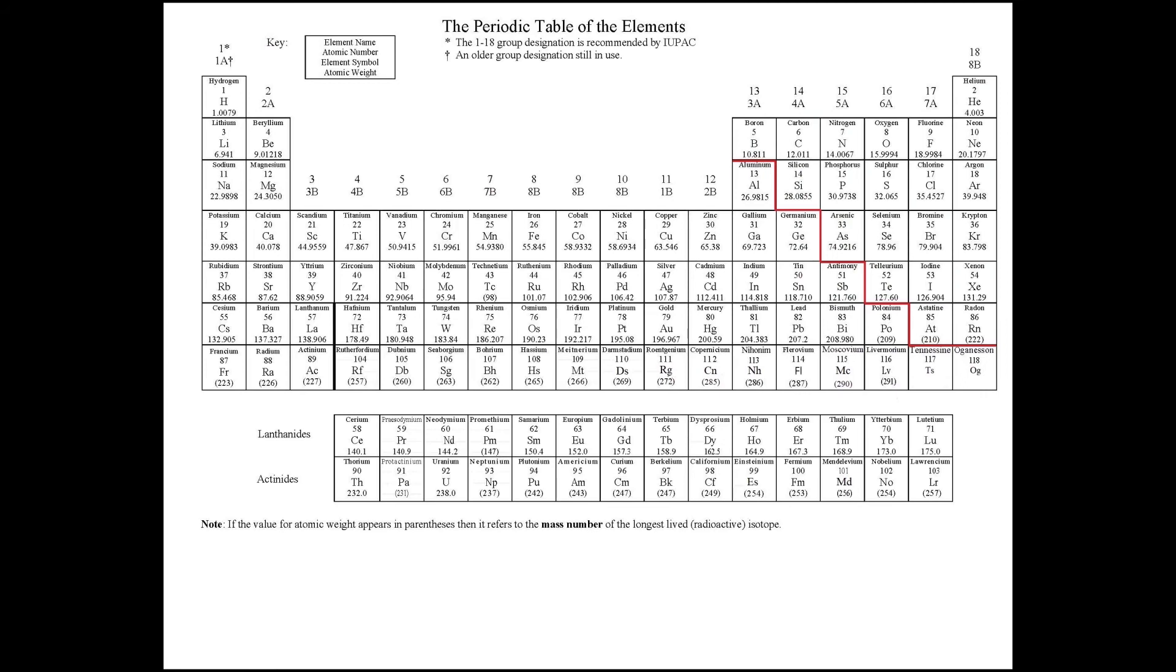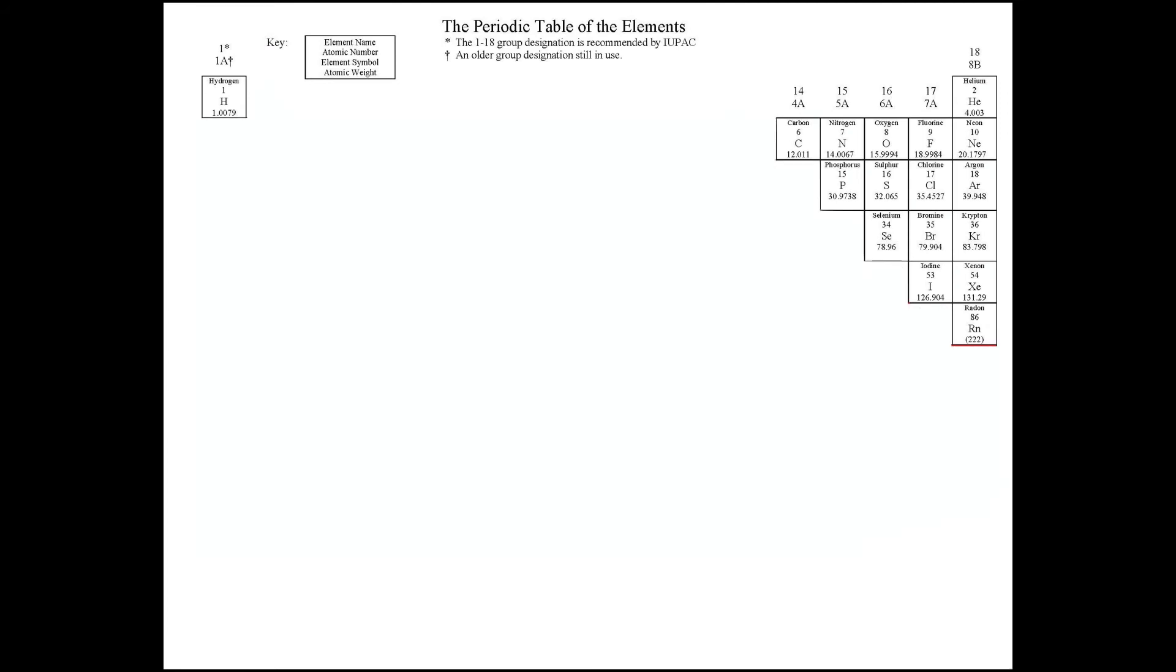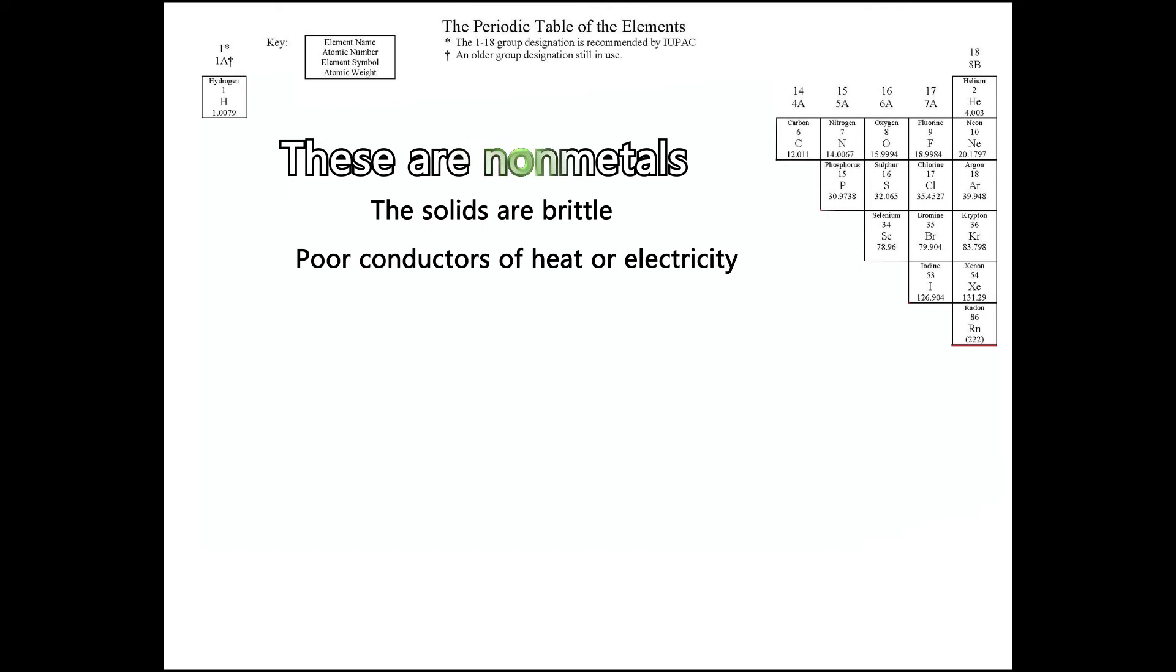The nonmetals are the last category and they are found on the right side of the red border. The solids of these elements are brittle and they don't conduct heat or electricity at any condition. These elements are not lustrous and they don't reflect light. These elements have a tendency to form covalent bonds.